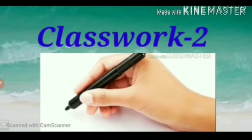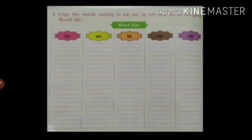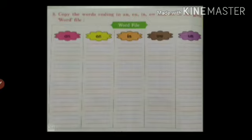Now we will solve the 2nd class word. In that, 3rd question is there, you see. On page number 14 in your English workbook, it is there. And copy the words ending in AN, EN, IN, OW and UN in the given word flow.